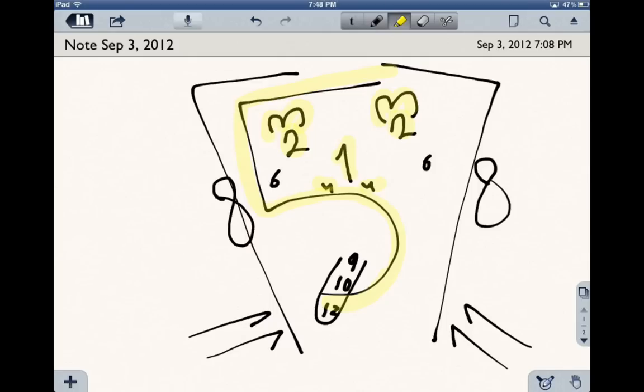Cranial nerve number six is a motor nerve, and it actually affects the external rectus muscle, and that's why it's lateral. It's the lateral rectus muscle of the eye.